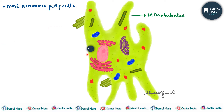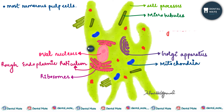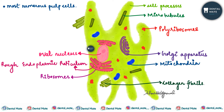They take up the hematoxylin stain and the cytoplasm is eosinophilic. They have an oval nucleus, cell processes, rough endoplasmic reticulum, ribosomes, mitochondria, Golgi apparatus, polyribosomes, and collagen fibrils.